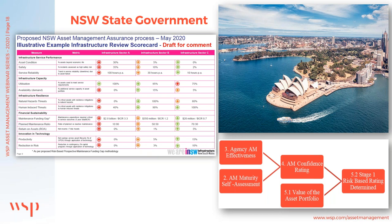We developed the processes and guidance workbook for the assurance framework. With the NSW asset management policy requiring alignment to ISO 55001, the international standard is the backbone of these assurance processes. Importantly, this is not a critical audit approach — rather, the intent is to provide the agency with support and improvement opportunities, reinforcing that the policy's intent is to lift capability in asset management and achieve the most efficient and effective management of public assets to deliver societal outcomes.